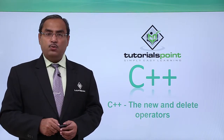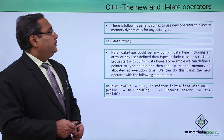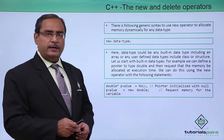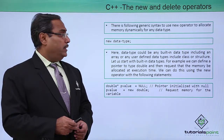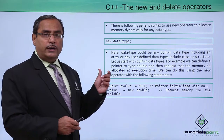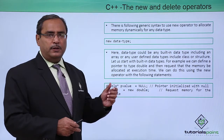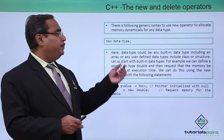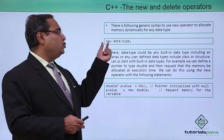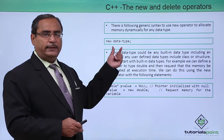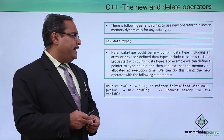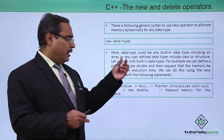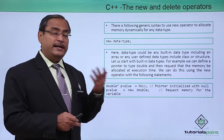C++ new and delete operators. There is the following generic syntax to use the new operator to allocate memory dynamically for any data type. If we define a new variable that should be allocated at a new address, the syntax on the right hand side will be new data type — it can be new int, new double, new character. The data type could be any built-in type including an array, or any user-defined type including a class or a structure.